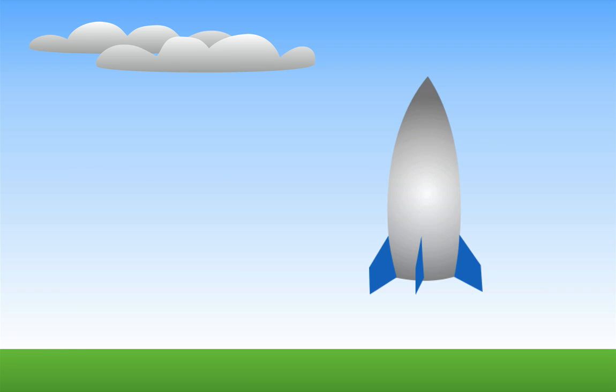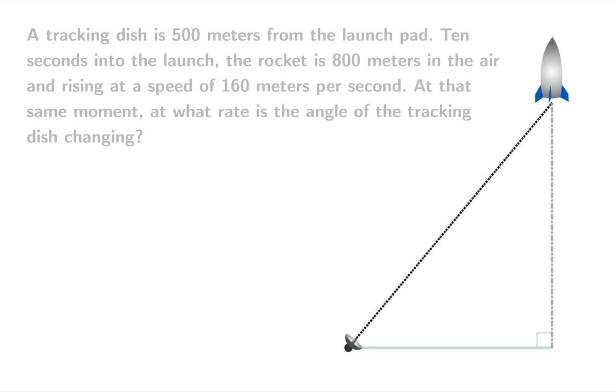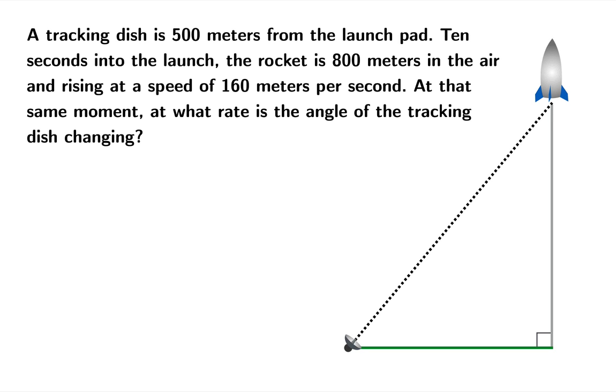Suppose a rocket is being launched and it's being tracked by a radar dish on the ground. As the rocket ascends, the dish is going to swivel to keep pace. Now, suppose a tracking dish is 500 meters from the launch pad. 10 seconds into the launch, the rocket is 800 meters in the air and rising at a speed of 160 meters per second. At that same moment, at what rate is the angle of the tracking dish changing?